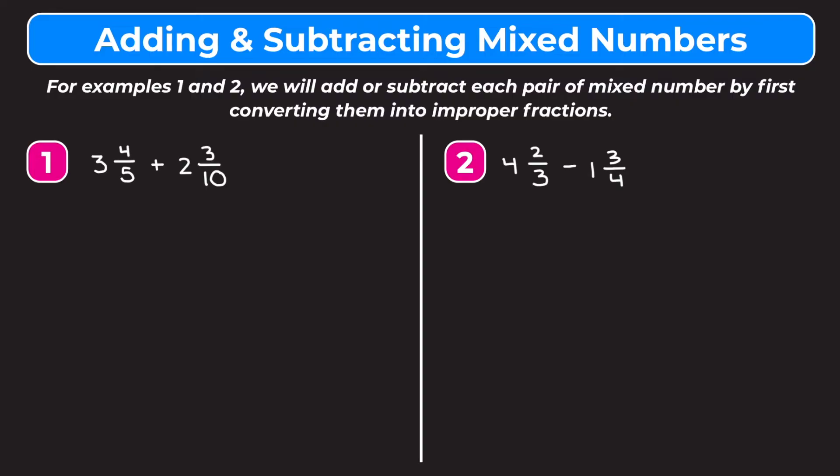So example one is 3 and 4 fifths plus 2 and 3 tenths. We want to first convert each fraction into an improper fraction.